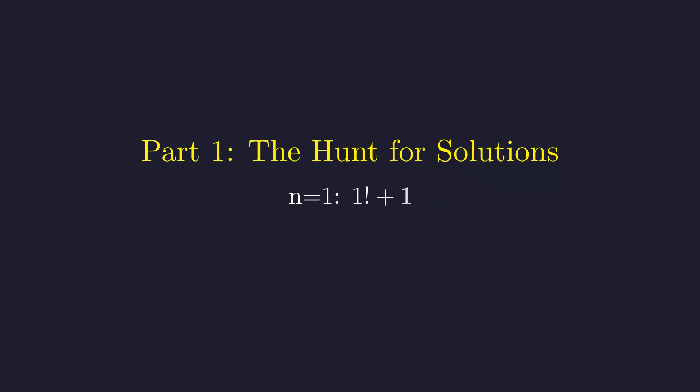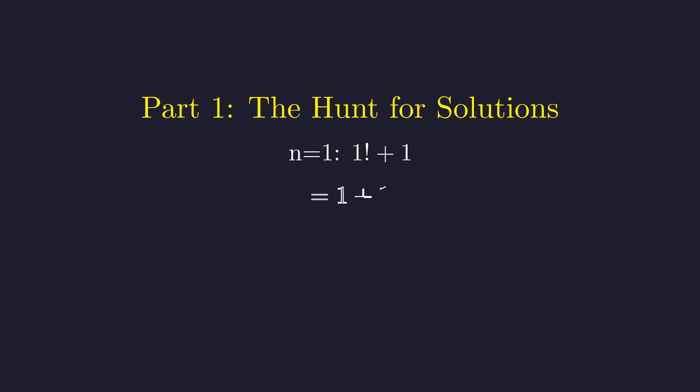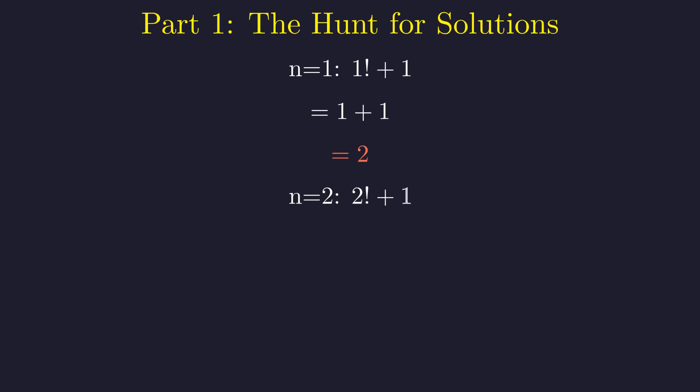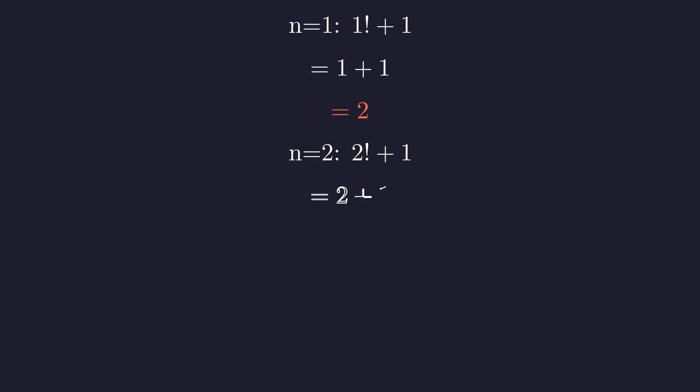For n equals 1, we have 1 factorial plus 1. 1 factorial is 1, which gives us 2. Not a perfect square. For n equals 2, 2 factorial is 2, which gives 3. Still no. For n equals 3, 3 factorial is 6, which is 7. No luck yet.